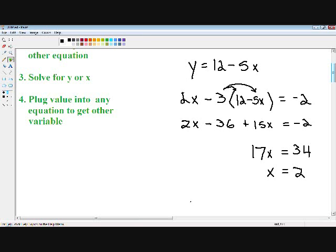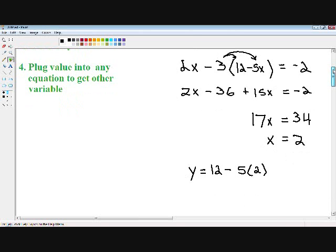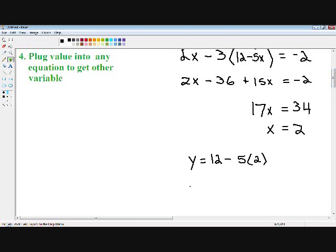So we're left with y equals 12 minus 5x. Instead of putting x I'm going to plug in a 2 since we know that x equals 2. 5 times 2 is 10, so 12 minus 10 equals 2. We know that y equals positive 2.